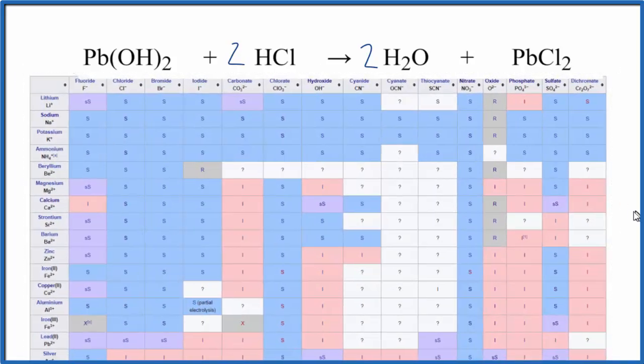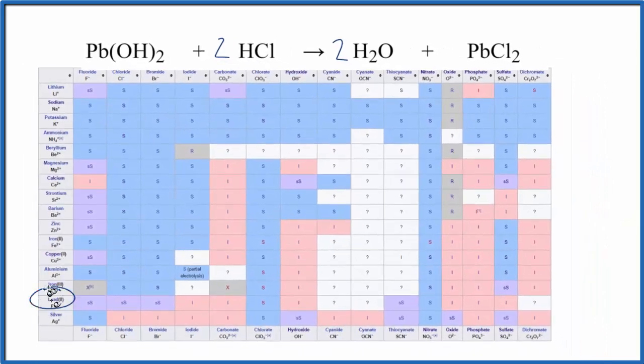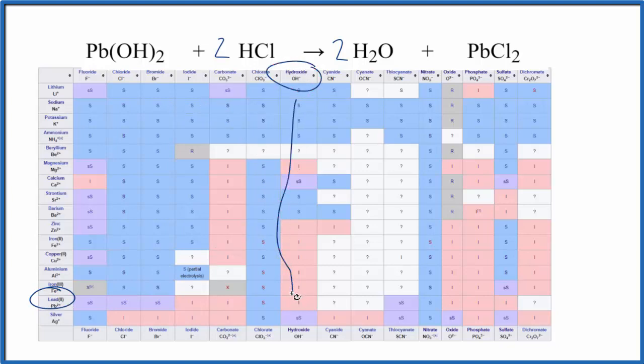So we have this solubility table, and we can look up lead way down at the bottom here, Pb²⁺, and hydroxide right here. So we go down and then we go over and you see that I there. That means that lead 2 hydroxide is insoluble. So we're going to write an S after that because it's not going to dissolve. It's going to be a solid. It'll actually just be sitting there when we put our hydrochloric acid over.